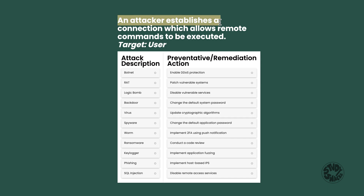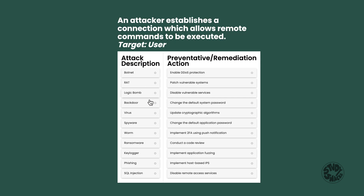In the next scenario, an attacker establishes a connection that allows remote commands to be executed — basically remotely controlling a victim's computer. There's a type of malware that allows this: a Remote Access Trojan, or RAT. When you see 'remote commands,' think remote access. A RAT can be used for surveillance, data theft, and further system compromise, and it allows the attacker to remotely control the victim's computer.